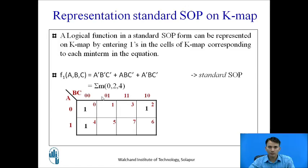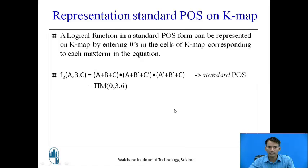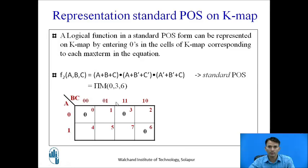To represent this equation on K-map, we require a 3 input variable K-map since we have 3 variables. By entering 1s into respective cells 0, 2, and 4, we can represent the SOP equation. Similarly, a standard POS function is represented on K-map by entering 0s in the cells corresponding to each max term. For f2(a, b, c), the max term representation is π M(0, 3, 6), so we enter 0s into cell numbers 0, 3, and 6.